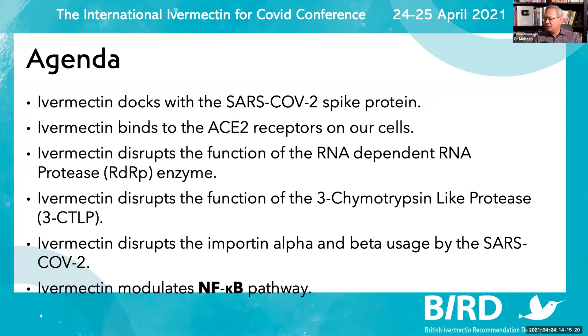So today we'll talk about that ivermectin docks with the SARS-CoV-2 spike proteins, ivermectin docks with the ACE2 receptor as well. Ivermectin disrupts the function of the RNA-dependent RNA polymerase or viral RDRP. Ivermectin disrupts the function of 3-chymotrypsin-like protease or 3-CL-PRO or MPRO. Ivermectin disrupts the important alpha and beta usage by the SARS-CoV-2 cargo. And finally, ivermectin modulates inflammatory system by nuclear factor kappa chain for the beta B cells. So let's start our discussion.